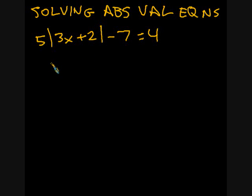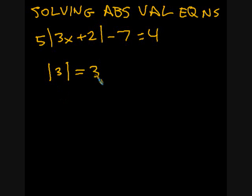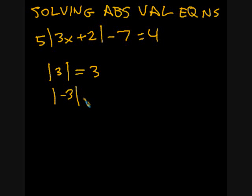We really need to start off with the definition of what the absolute value is. First, let's look at this: the absolute value of three. Many people believe this is negative three, but it's not — it's actually positive three. Absolute values don't change the sign of the expression within them; they make whatever is inside positive. So positive three stays positive three, but negative three inside absolute value signs becomes positive three.